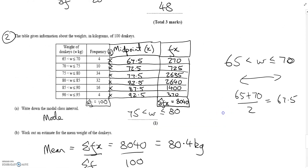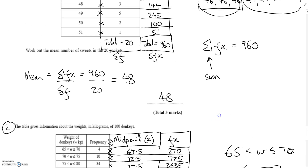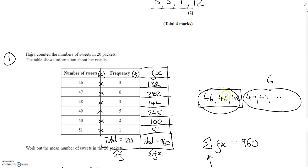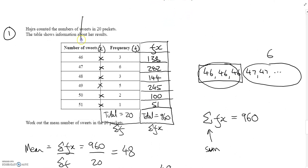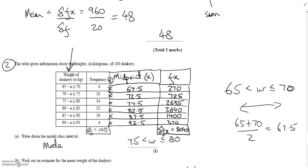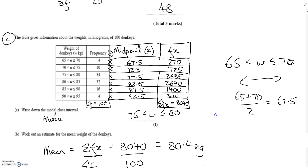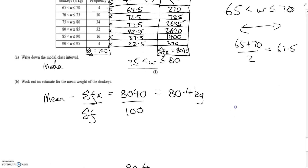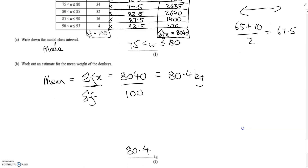The key difference between question one and question two: in the first question we had exact values, so we could multiply value times frequency straight away. In the second question we had a range of values, so we picked the midpoint, multiplied along, added everything up, and divided by the total number of things to get our estimate.